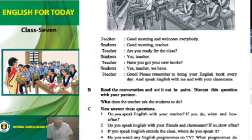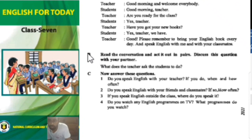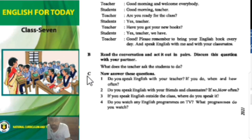Now let's see what exercises are given in our textbook. We see exercise B: 'Read the conversation and act it out in pairs, and discuss this question with your partners.' This kind of question is not needed in your exam, but it is needed to improve your English skill, so practice it with yourself. We move to number C. In number C you see some questions you have to answer — you will find these in your question paper, and it is the most important item in your question paper.